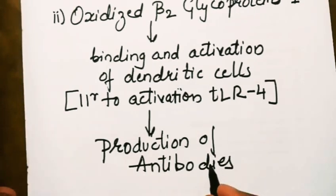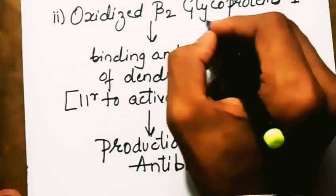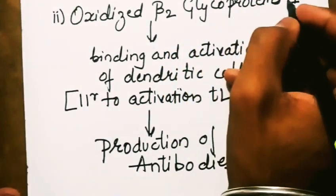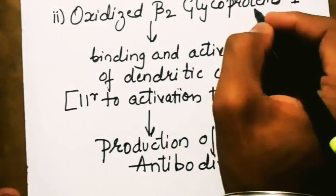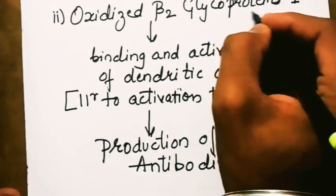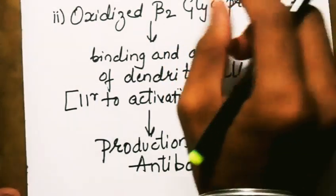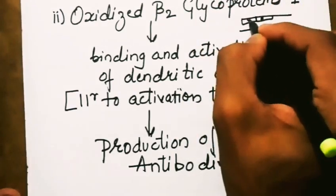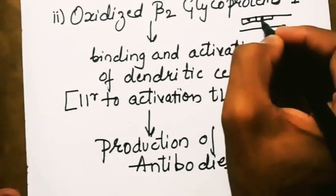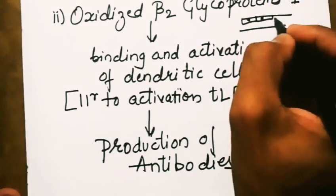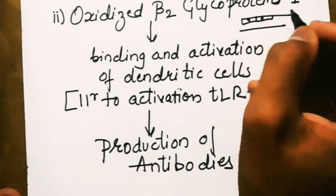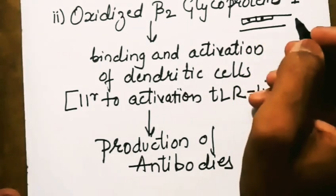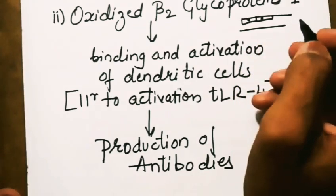B2 glycoprotein 1 are plasma proteins associated with endothelial cells of blood vessels, especially those of trophoblasts, which are present during the embryonic stage.